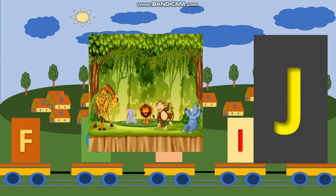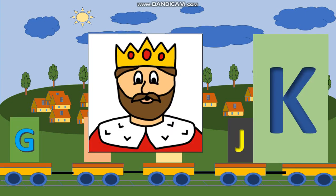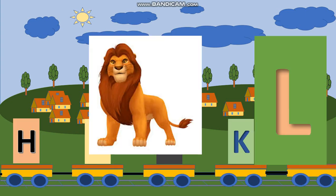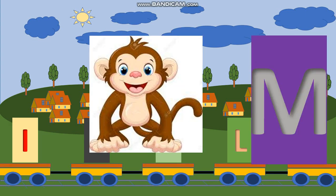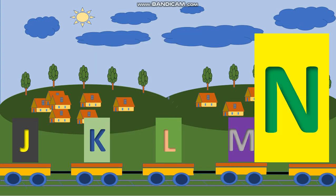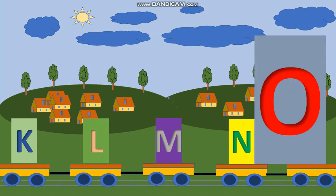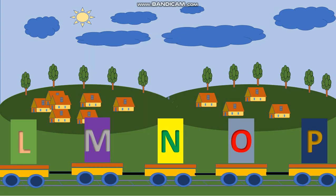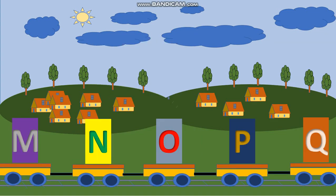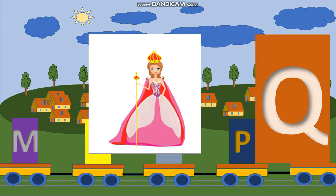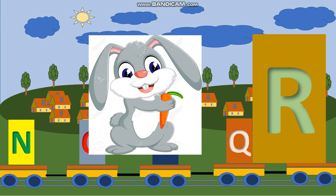J, J, jungle. K, K, king. L, L, lion. M, M, monkey. N, N, nest. O, O, octopus. P, P, parrot. Q, Q, queen. R, R, rabbit.